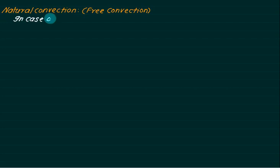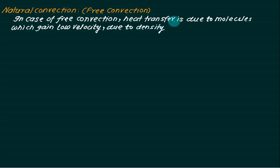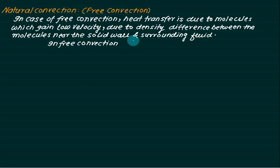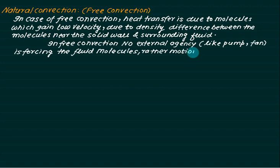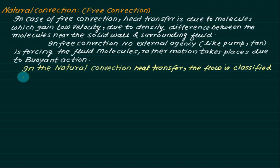In natural convection or free convection, the heat transfer rate is due to molecules which gain very low velocity due to the temperature difference. The density changes are very small — the difference between molecules near the solid wall and the surrounding fluid. No external agency like pumps, fans, or blowers is used. The fluid motion takes place due to buoyancy action. The flow is classified into two categories.